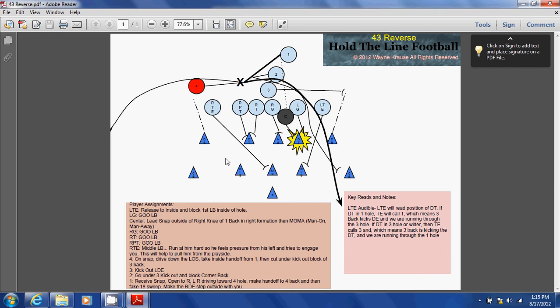So the other way that this play could be run is if this D-tackle was lined up in the three hole. If the D-tackle was in this three hole either directly on this left guard—which we're pretty close here—but let's pretend that in this picture if he was moved over here, either on or outside of this left guard, the left tight end would call a three audible.